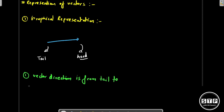For example, if I am applying a force in this direction, it means the vector is in the left direction, because this is the tail and this is the head. If I denote a vector like this, it means the vector is in the right direction.